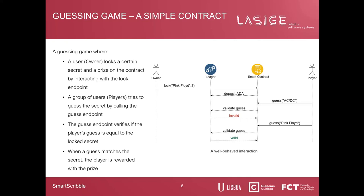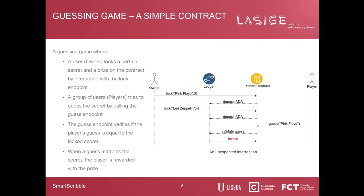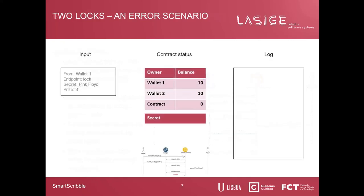Despite all of that, we were able to identify some problems that the programming language does have, which is the topic of the next section. We present a running example: a guessing game, where an owner locks secrets and a group of players makes guesses until one of them eventually guesses the correct word. The winner gets the prize deposited by the owner. This shows a well-behaved interaction, but what happens if we slightly deviate from the intended flow? As you can see from the diagram, something goes wrong — the player cannot get the prize despite guessing correctly.